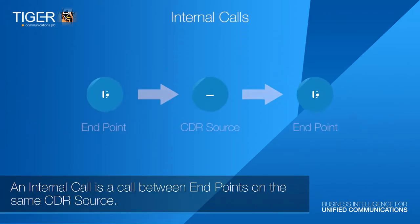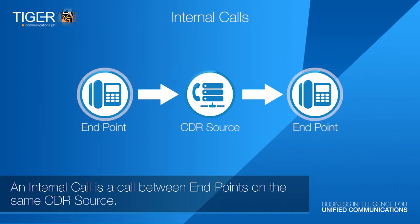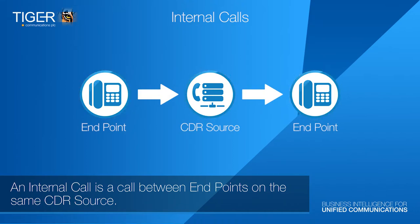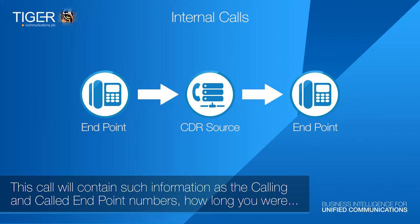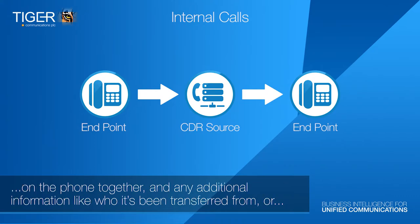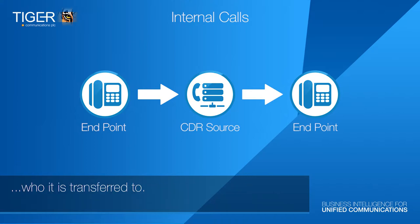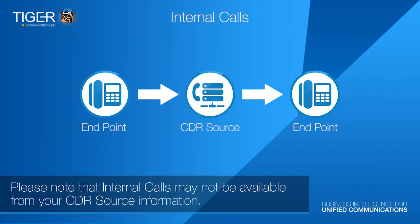An internal call is a call between endpoints on the same CDR source. This call will contain information such as the calling and called endpoint numbers, how long you are on the phone together, and any additional information like who it has been transferred from or who it is transferred to. Please note that internal calls may not be available from your CDR source information.